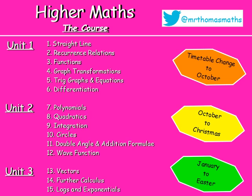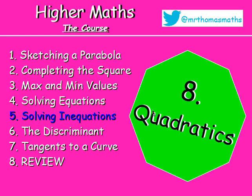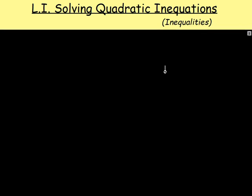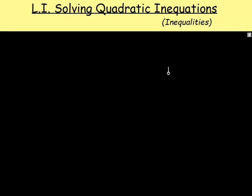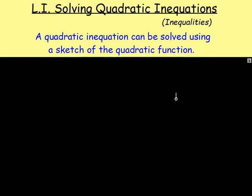Hello! Here we are with Chapter 8, Lesson Number 5: Solving Quadratic Inequations. Last lesson we were solving quadratic equations and I showed you that there are four methods to solve your quadratics. However, the same is not true when you have an inequation, which is basically an equation but instead of an equal sign you've got less than, or greater than, or less than or equal to, or greater than or equal to. To solve them there's just one method that we want to use, and that method is sketching. A quadratic inequation can be solved using a sketch of the quadratic function.